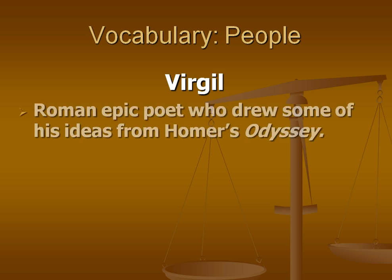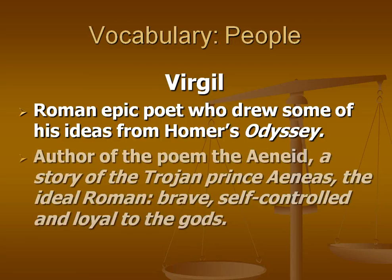Virgil was one of the important people in Rome. He was a Roman epic poet who drew some of his ideas from Homer's Odyssey. He was the author of the poem The Aeneid, and that told the story of the Trojan prince Aeneas, and he represented the ideal Roman. He was brave, self-controlled, and loyal to the gods.